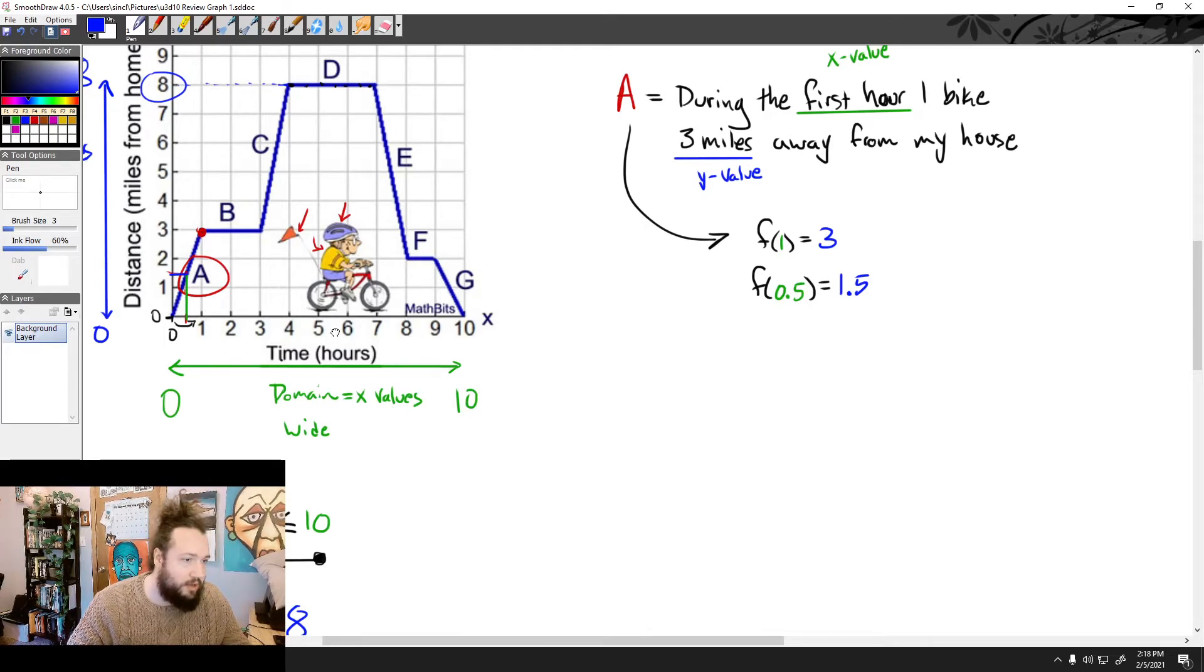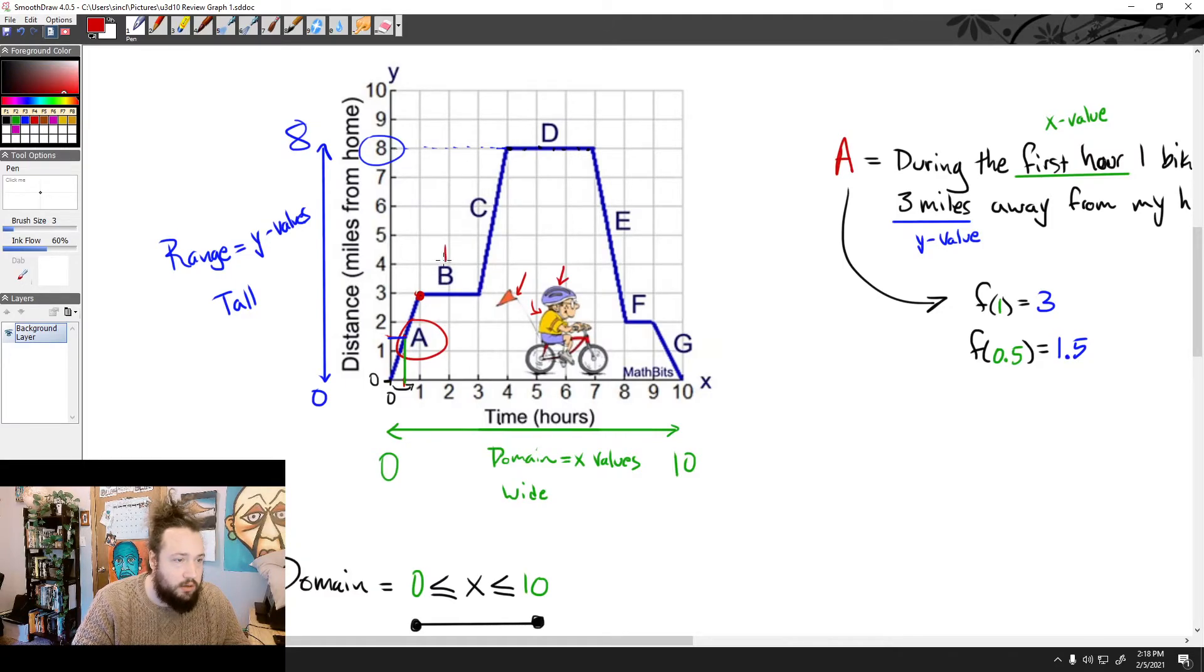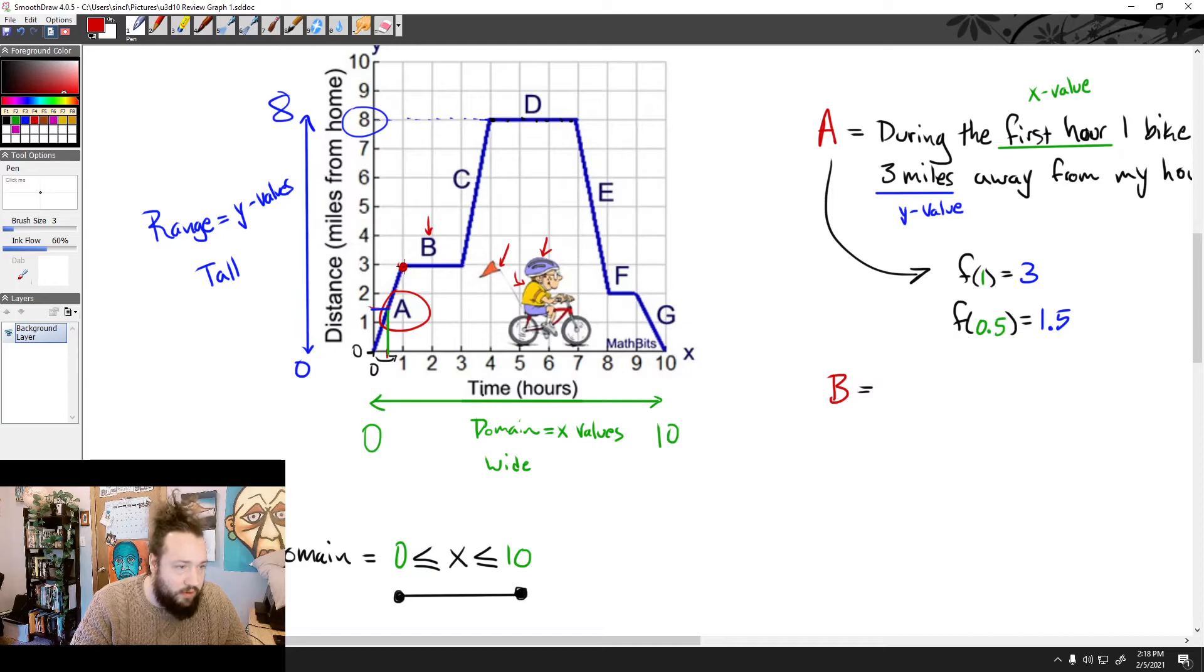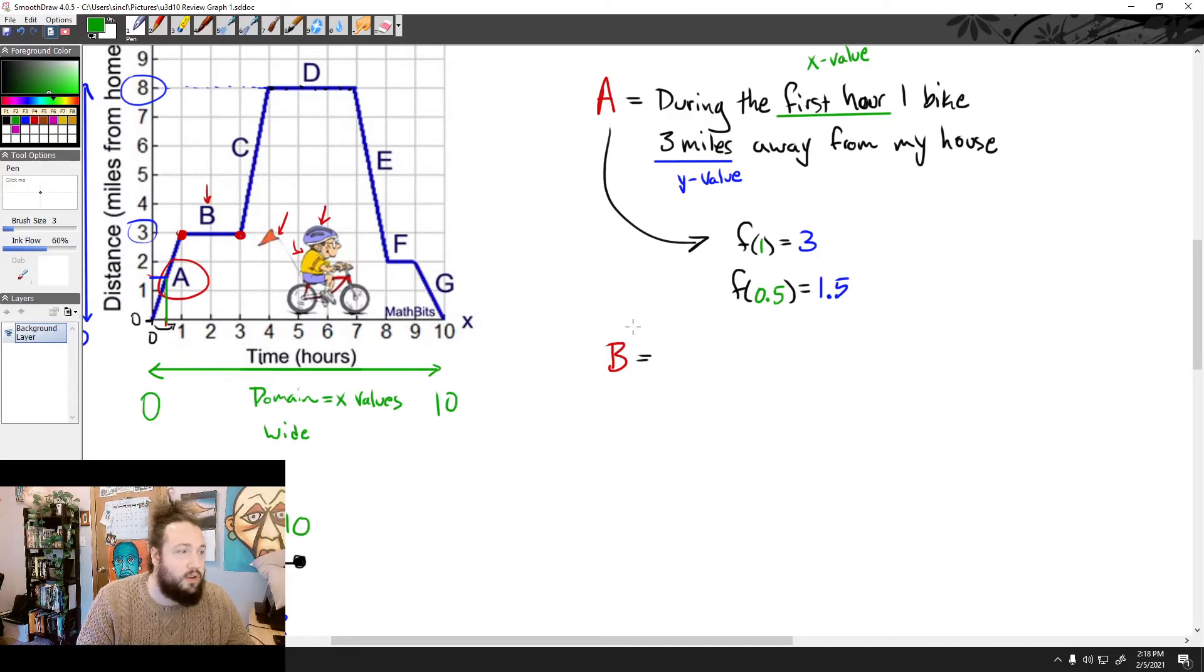Now, let's talk about section B. Okay? So section B. In section B, that's an interesting section because this is the first time that you don't see me moving anywhere. Okay? So notice this. From all the way from the beginning of B to the end of B, I'm staying at 3 miles away from home. Okay? So that means that I've actually stopped.